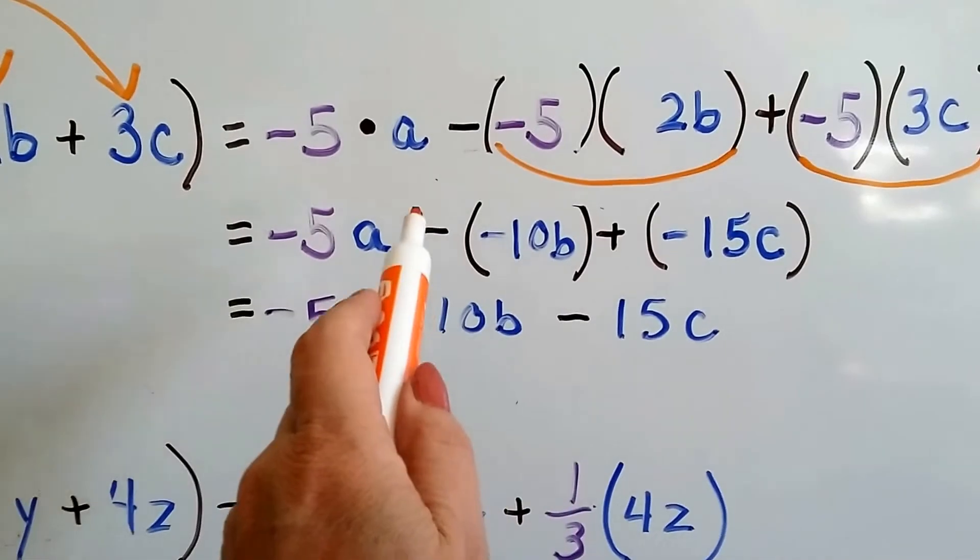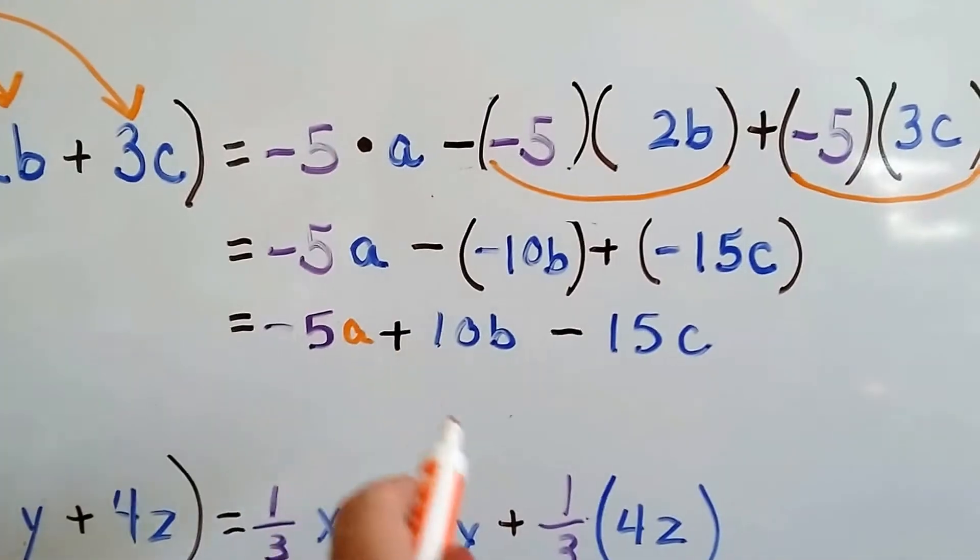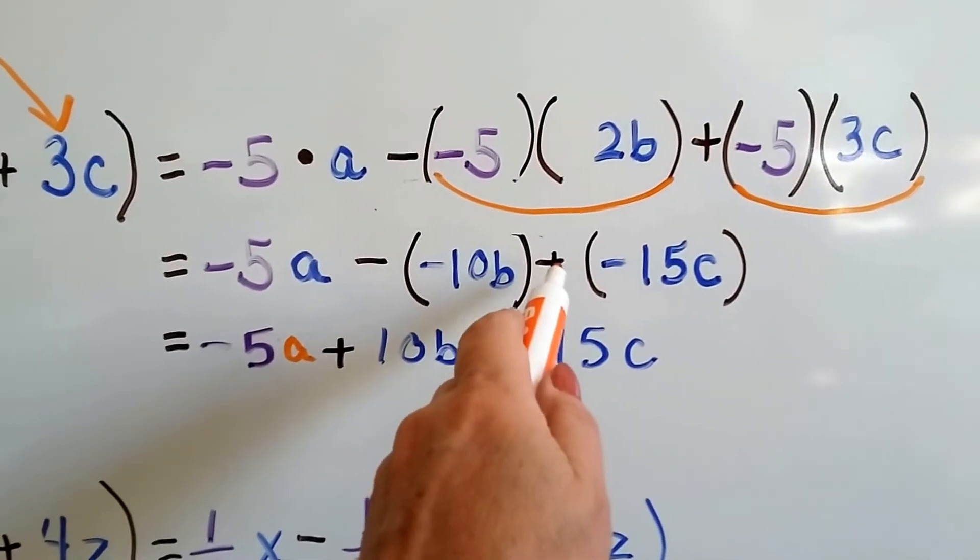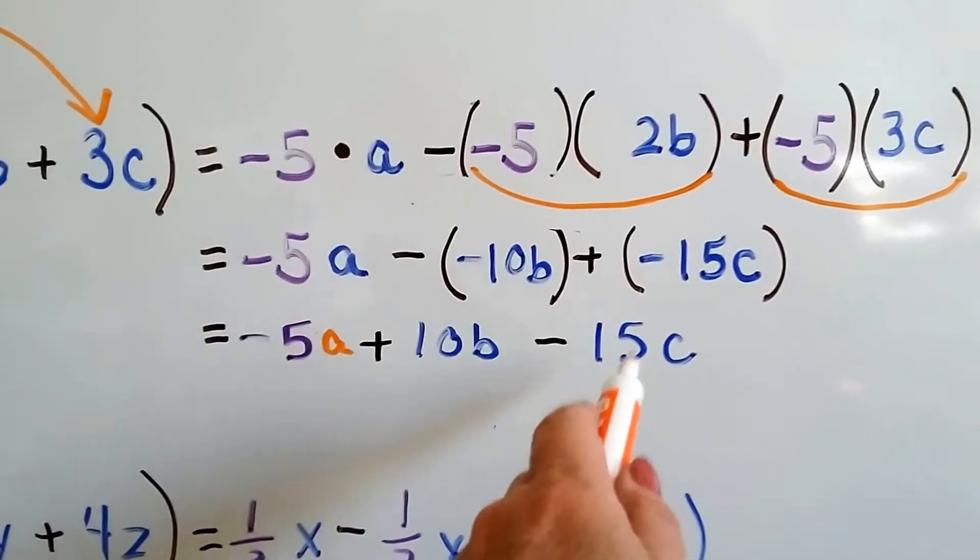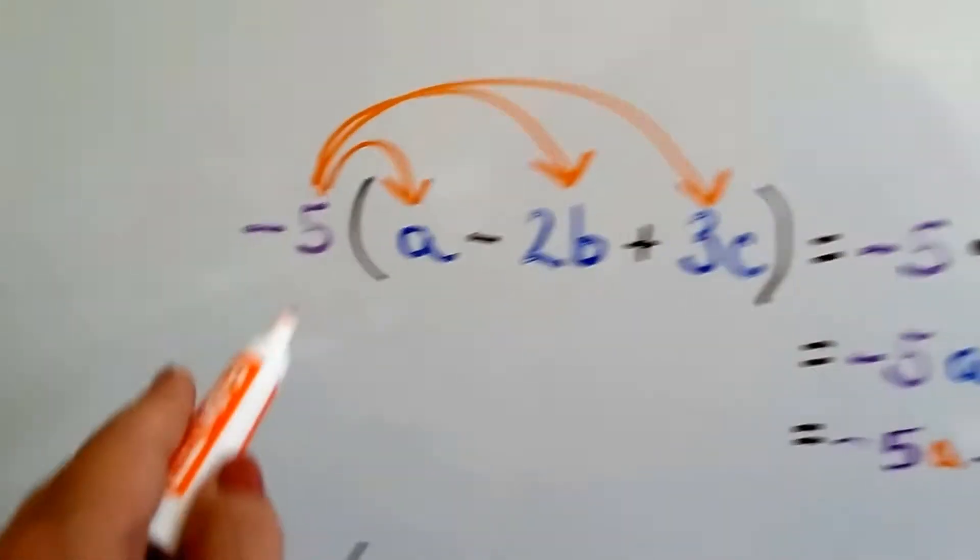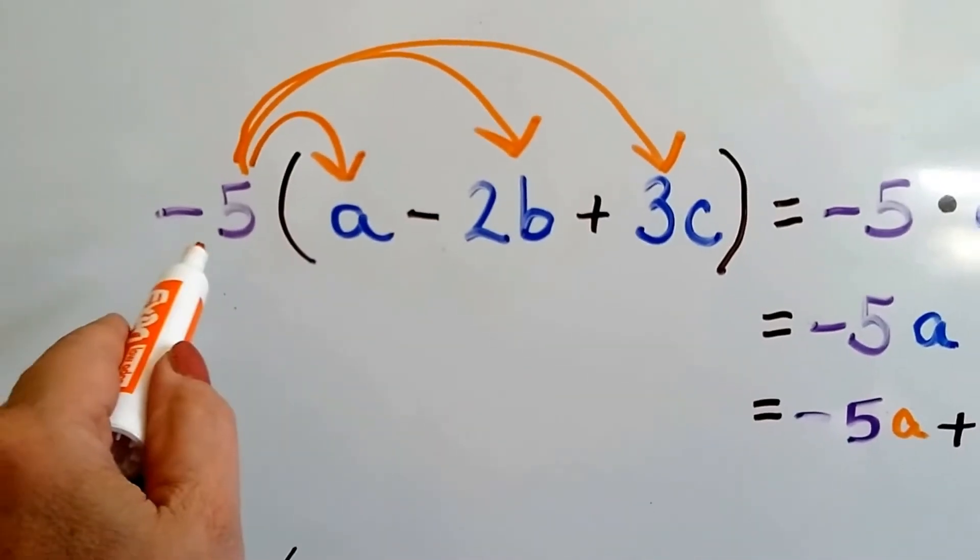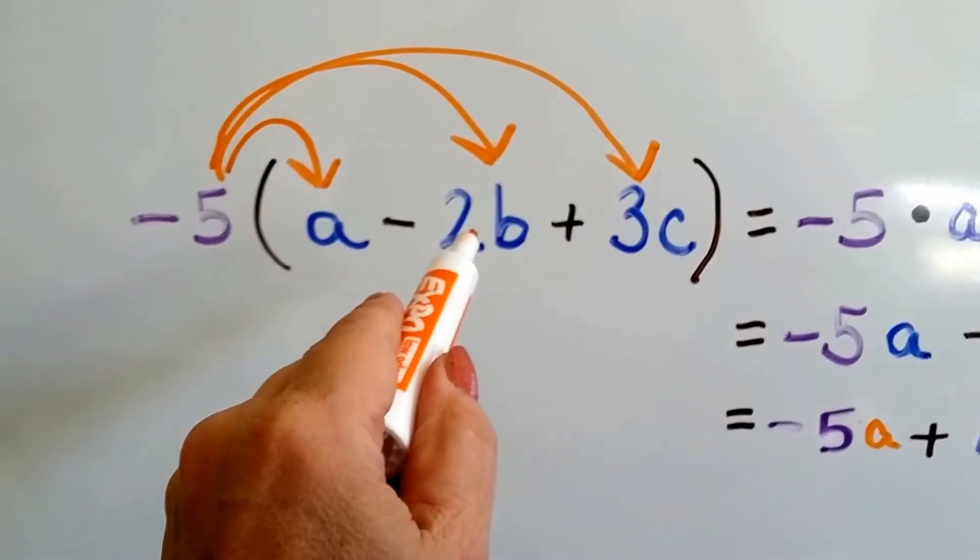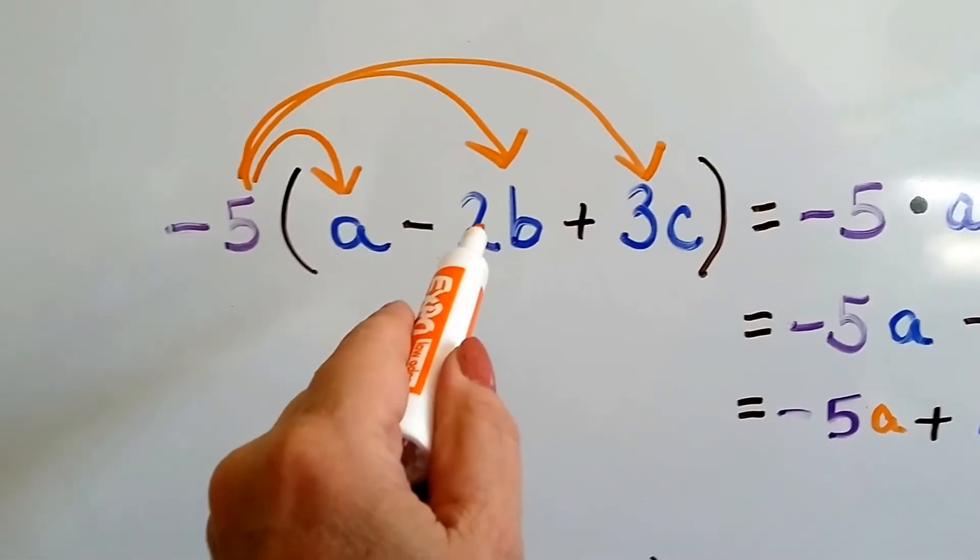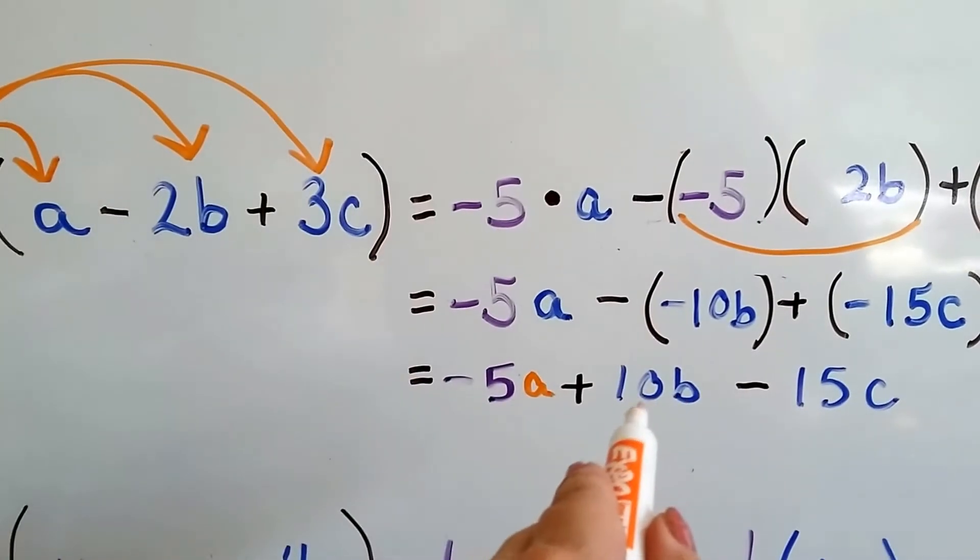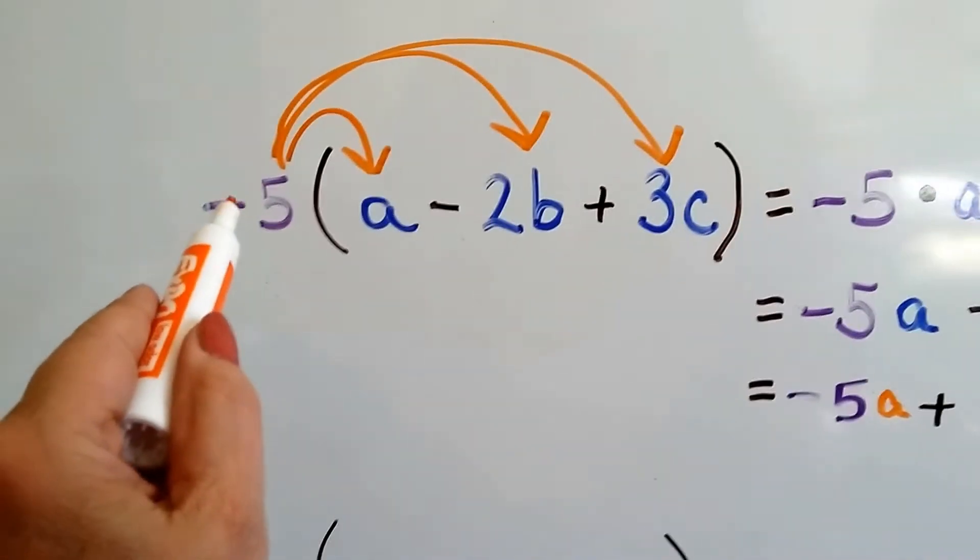Remember, we add the opposite. When we subtract a negative, we add the opposite. Remember, that link's in this video. And because we're going to add a negative, we just put minus 15c. Now is that confusing to you? Let's look at it this way. We've got negative 5a minus 2b times negative 5. That's a negative 10. And that gave us the positive 10 because we were subtracting a negative. It became a positive.